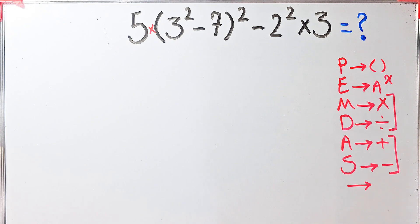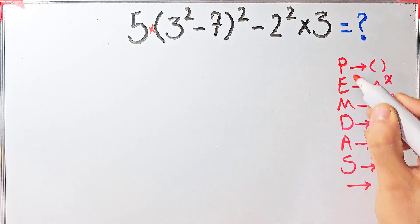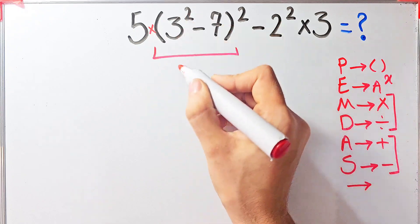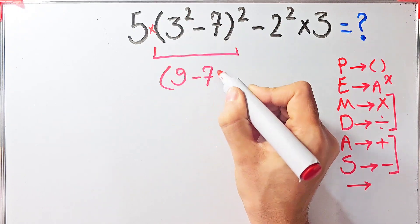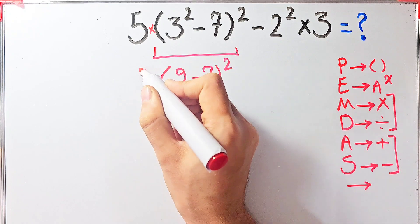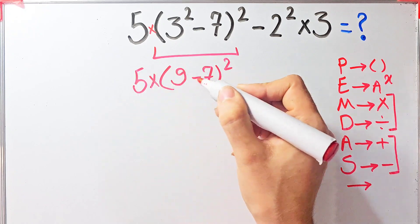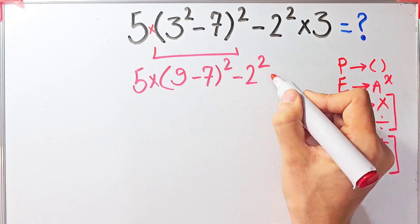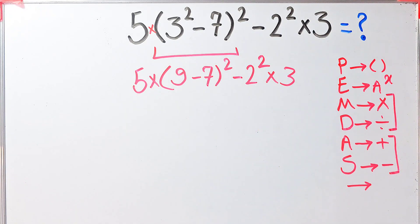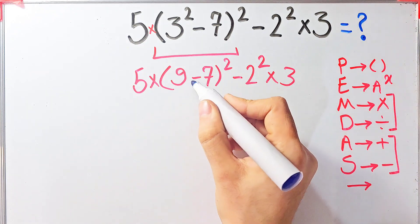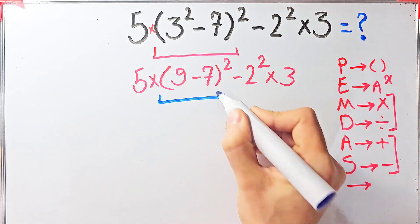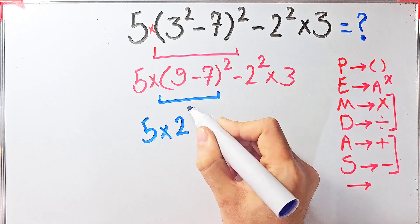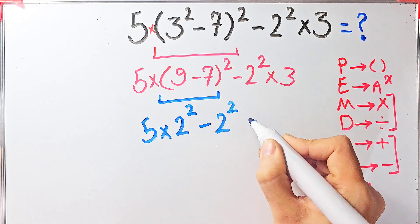According to the PEMDAS rule, first we simplify the parentheses. Inside the parentheses we have three to the power of two, which equals nine, then minus seven. The question becomes five times nine minus seven, to the power of two, minus two to the power of two times three. Again we simplify the parentheses: nine minus seven equals two. Now we have five times two to the power of two, minus two to the power of two, then times three.